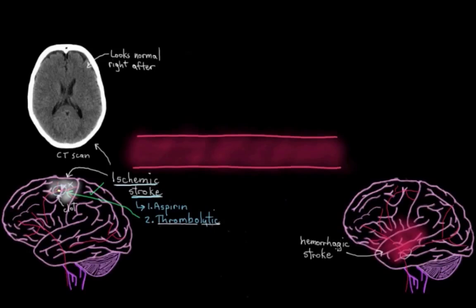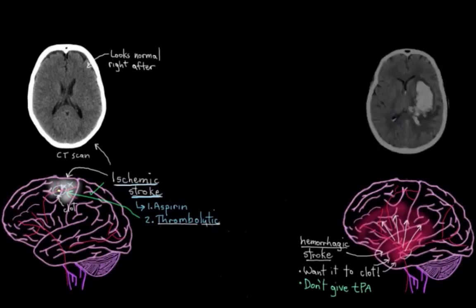With hemorrhagic strokes, though, it's a different story. Because when you have vessels that are bleeding out, the first thing you want is for it to clot off and stop bleeding. And therefore, the last thing you want is to activate your plasminogen clot busting system. So you won't be given TPA. Because if you are given TPA, then your blood will be far less likely to clot. As we saw earlier, blood will just continue to pour out of this deficiency in the blood vessel here.